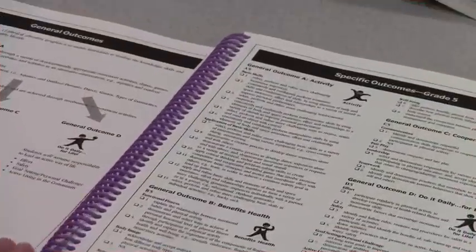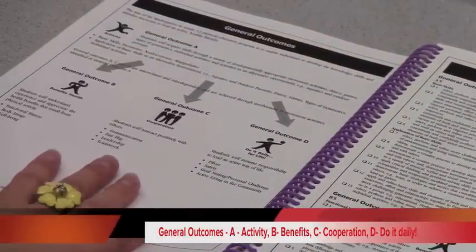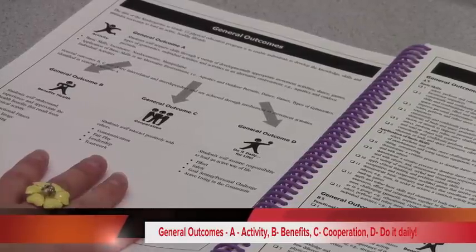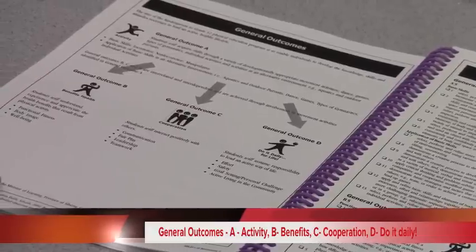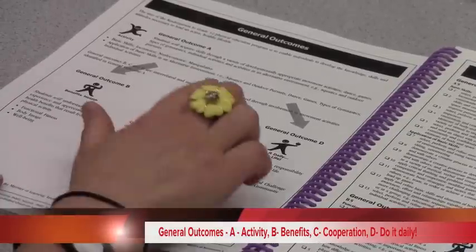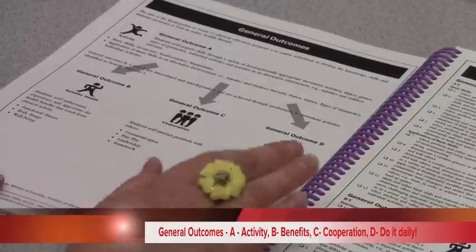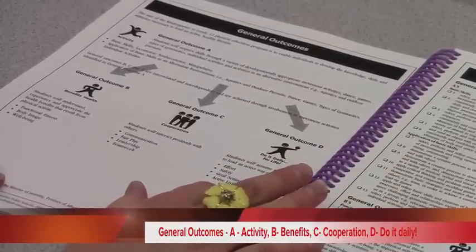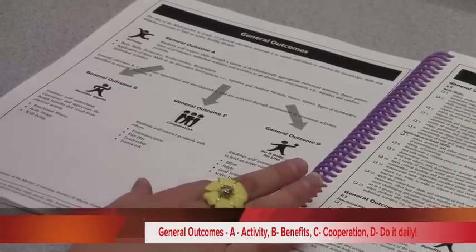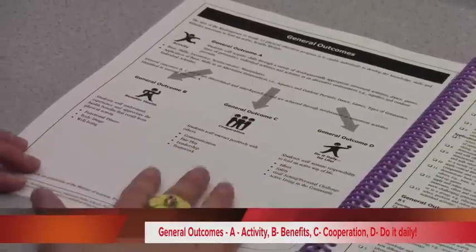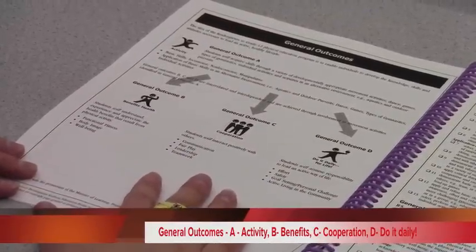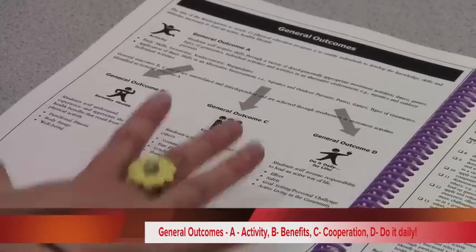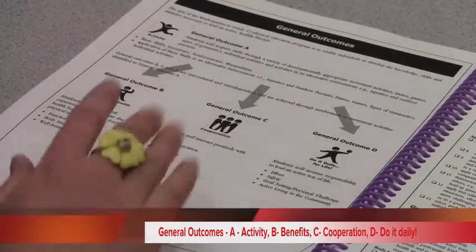The resource starts with a quick general overview of the ABCDs outcomes: A being activity — locomotor, non-locomotor, manipulatives; general outcome B, which is benefiting health; general outcome C, cooperation; and D is doing it daily, doing it for life — which connects to daily physical activity and our DPA of 30 minutes a day. When we look at our district priorities — citizenship, creativity, innovation — these four outcomes hit all of those areas perfectly well.